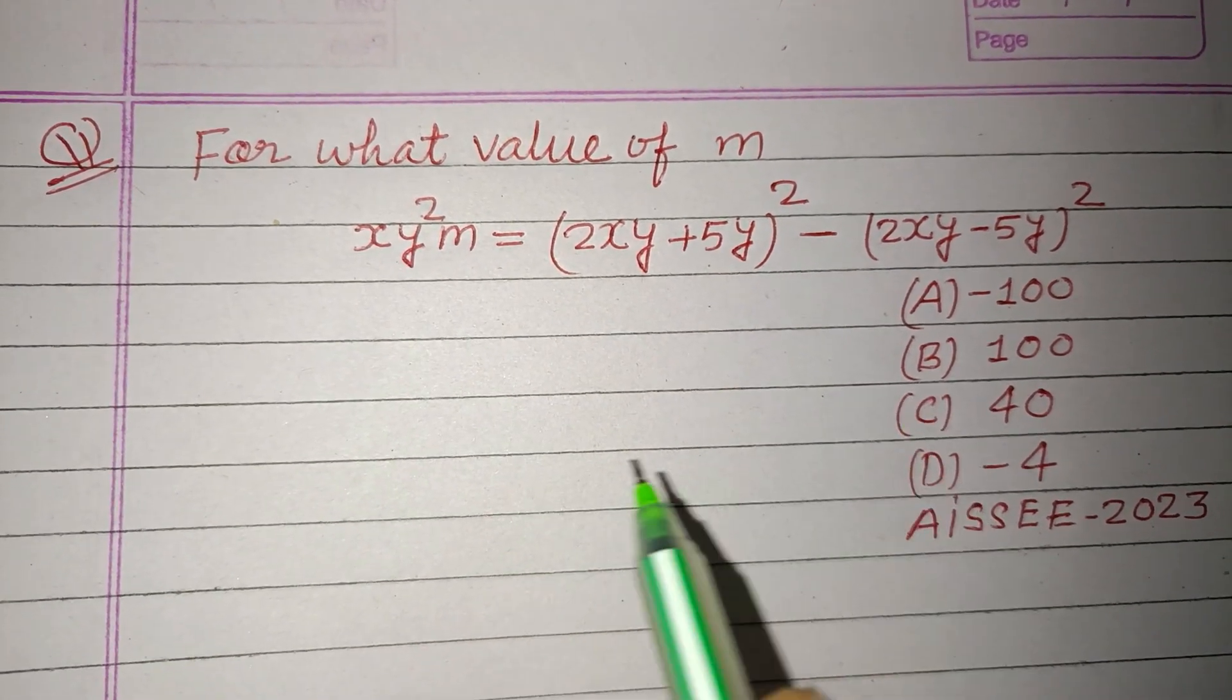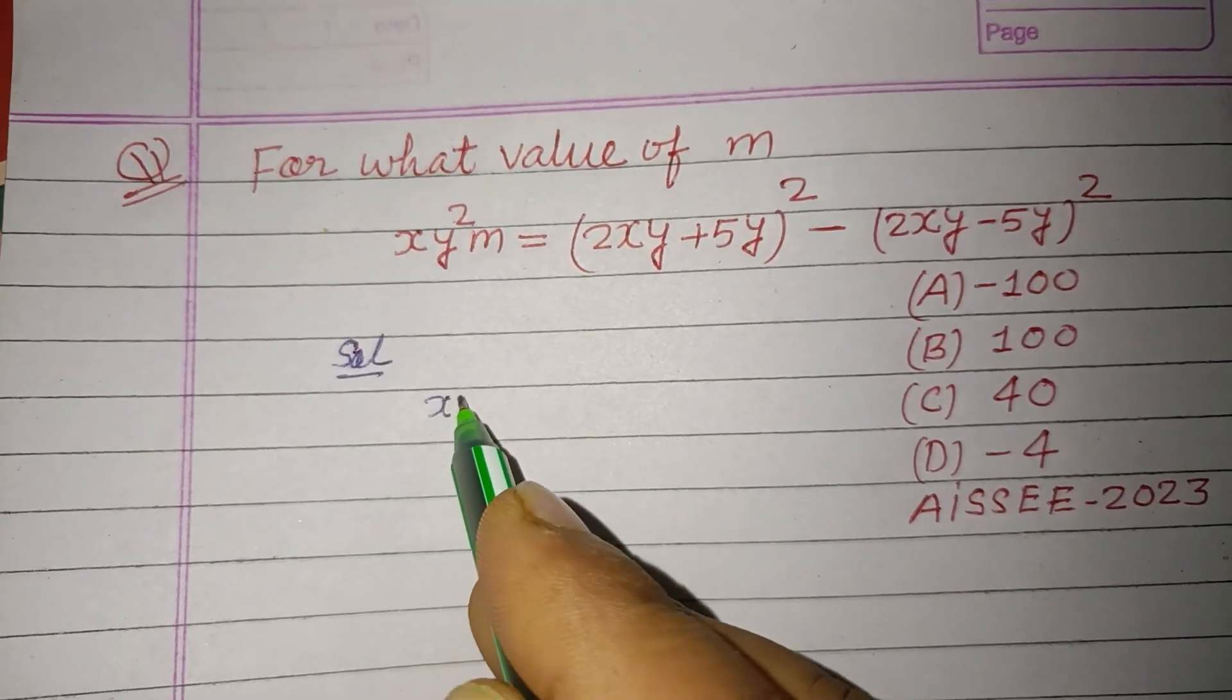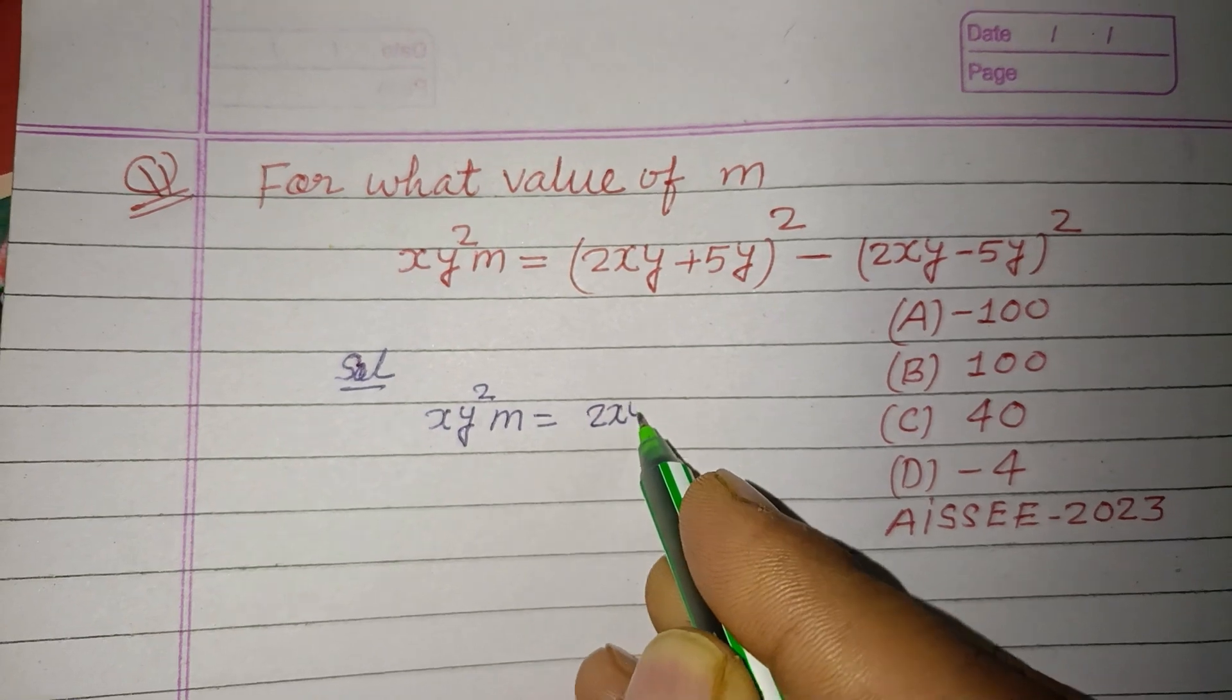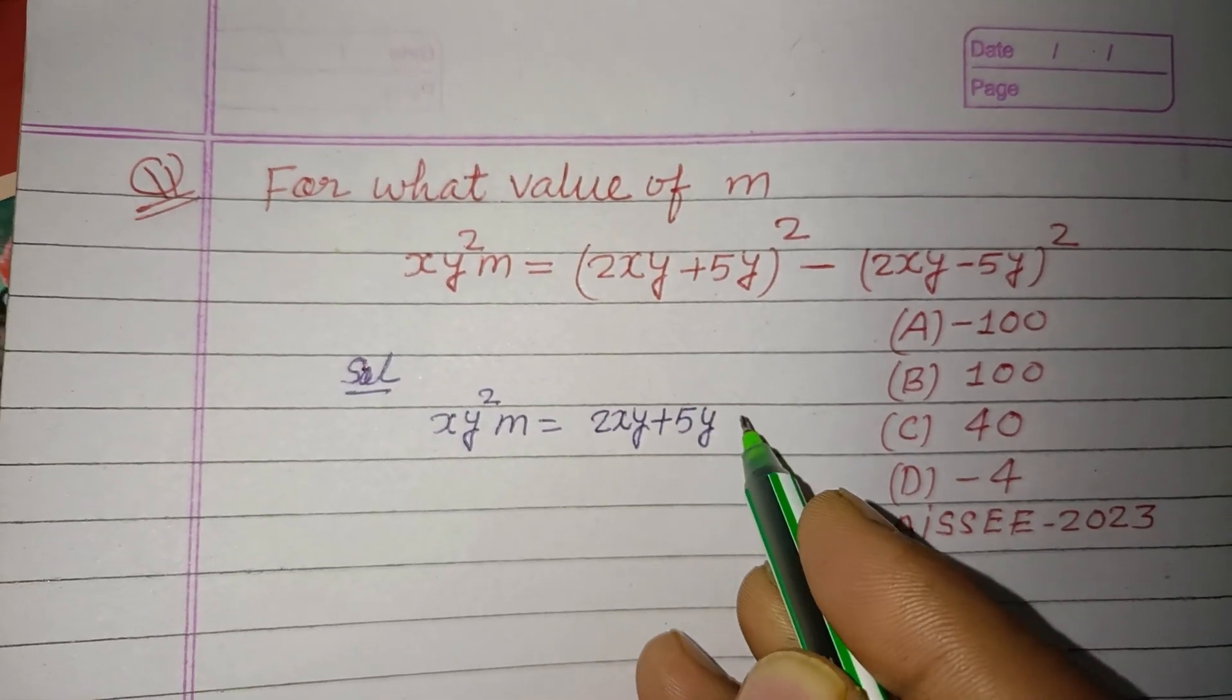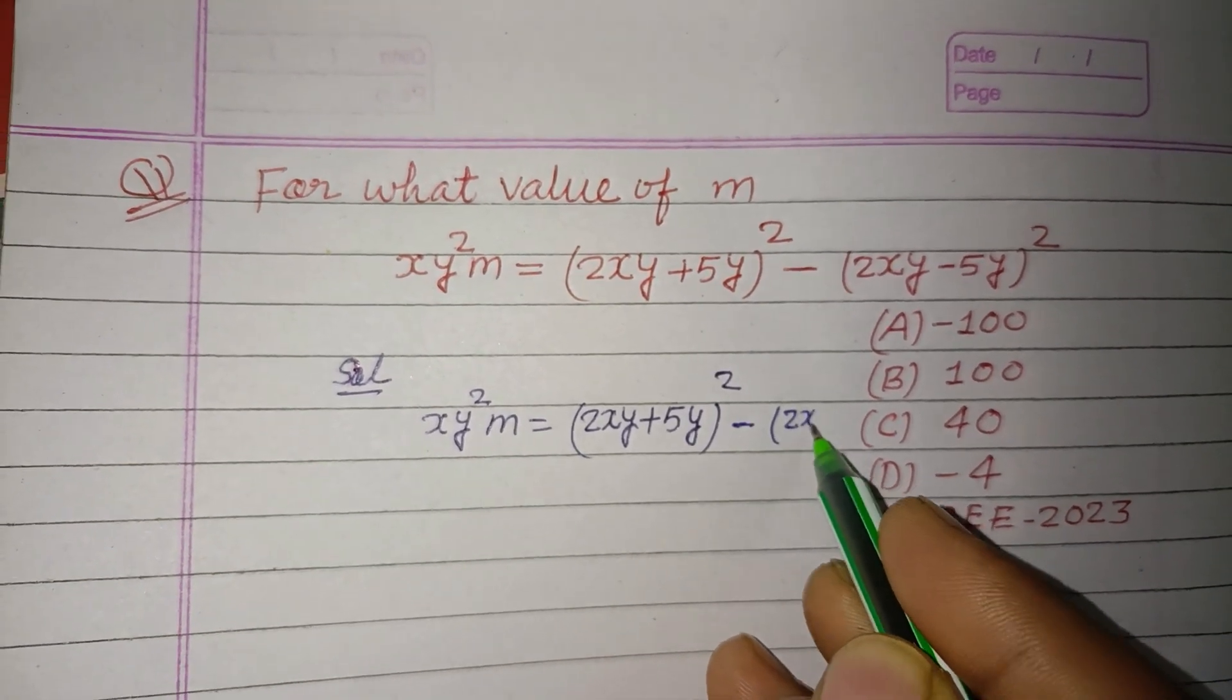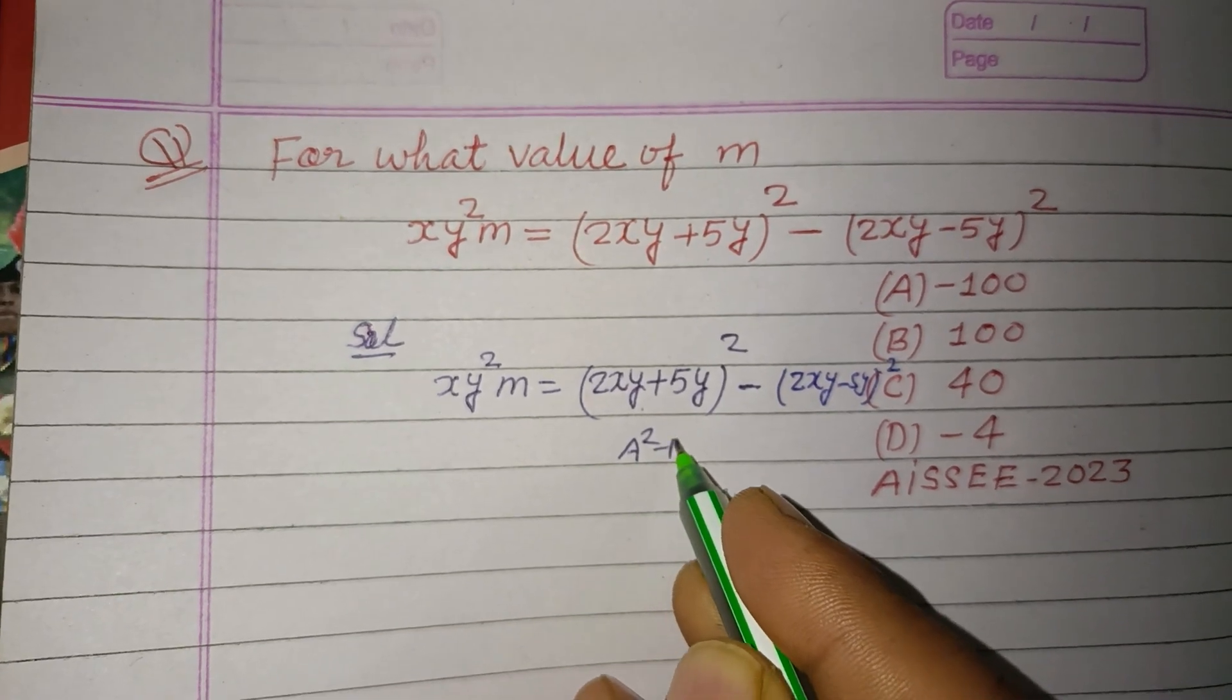So student, here we have x y square m equals 2xy plus 5y whole square minus 2xy minus 5y whole square. Here we use a square minus b square.